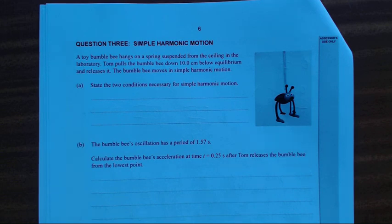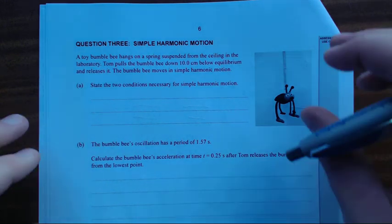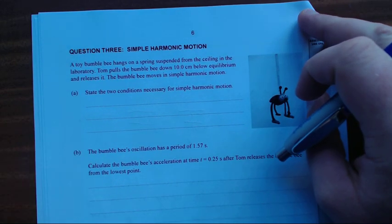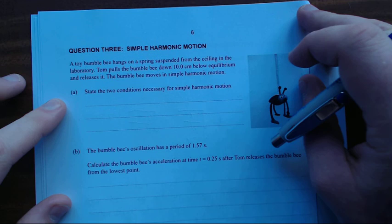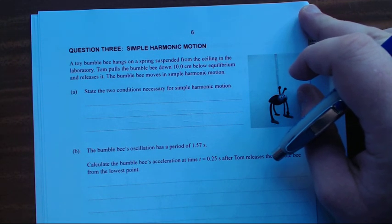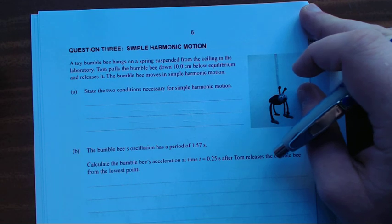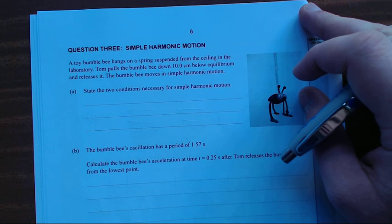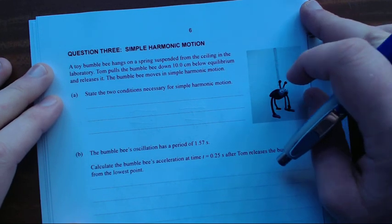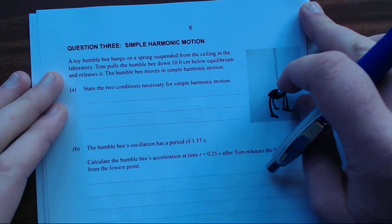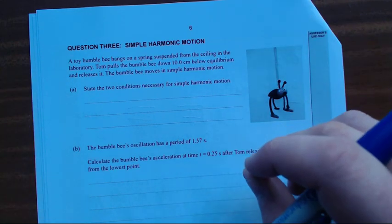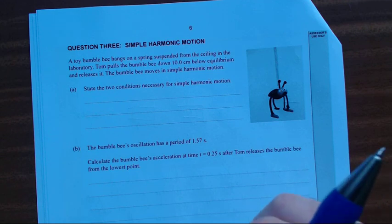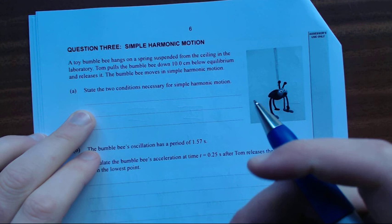State the two conditions necessary for simple harmonic motion to occur. There are sort of two ways to go about this. First, you could just memorize two conditions - there's really only one that you could break up into two components. The force has to be proportional to displacement. That's the main condition. And it's assumed that the force acts in the opposite direction of displacement.